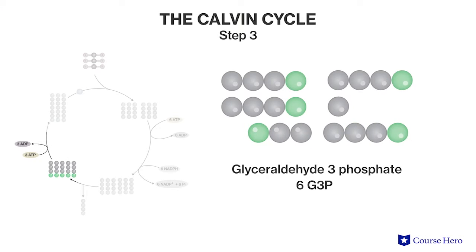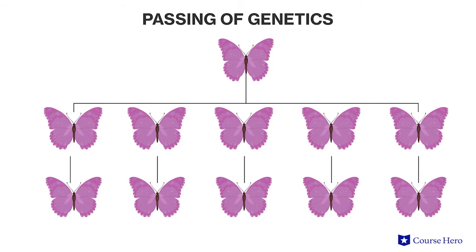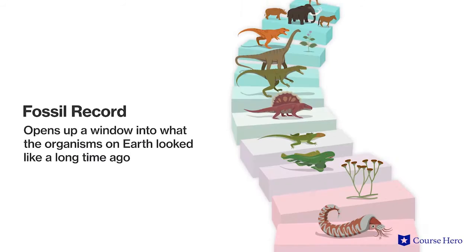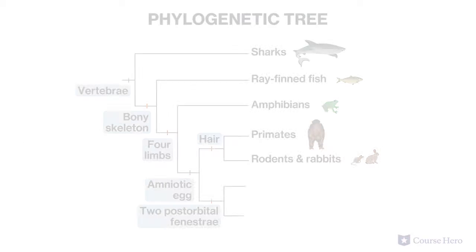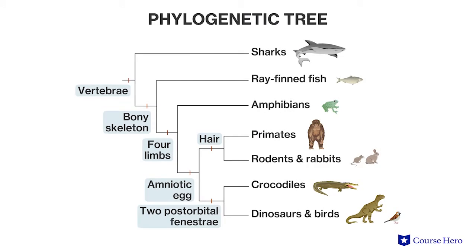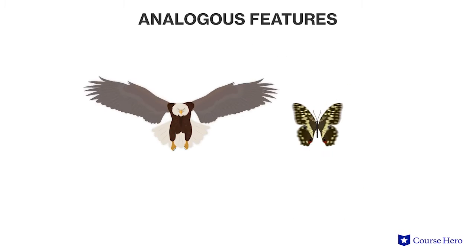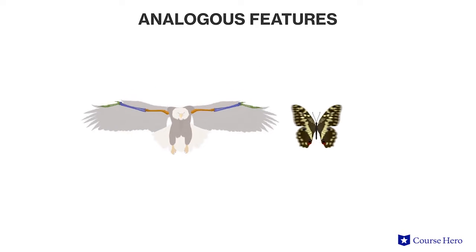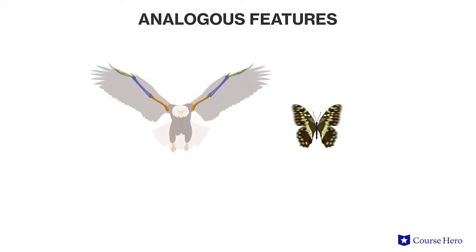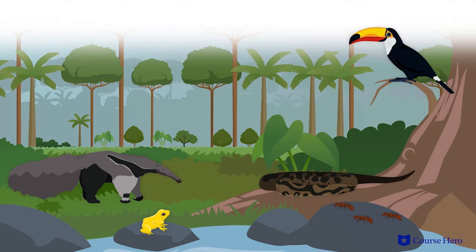Our introduction to college-level biology gives you an understanding of topics ranging from the chemistry of life, cells, genetics, evolution, to biological diversity and plant and animal structure and function, and ecology.